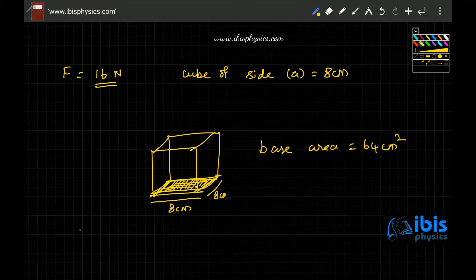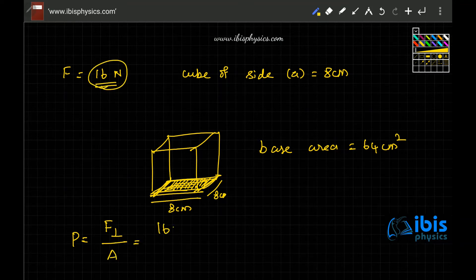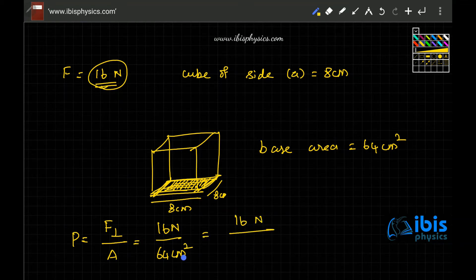Then we know that pressure is force, that means force perpendicular thrust by area. So the force distributed is 16 Newton and the area on which it is acting is 64 centimeter square. So here 16 Newton by 64 centimeter square.